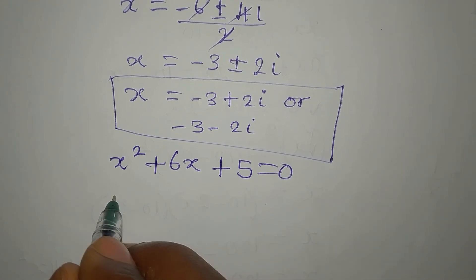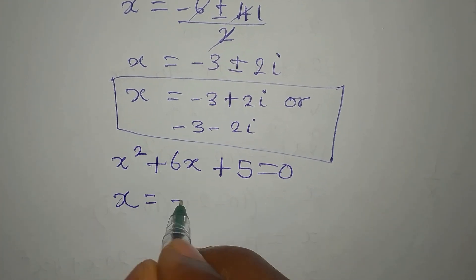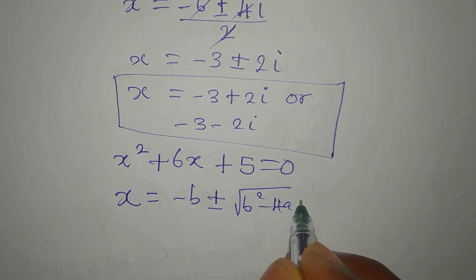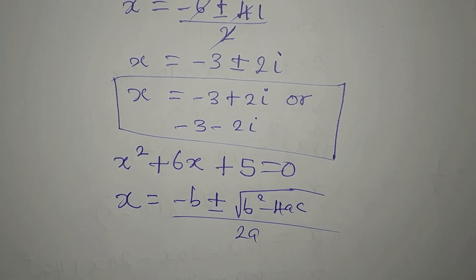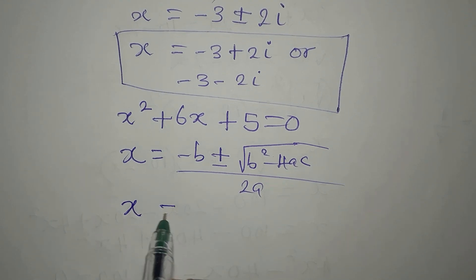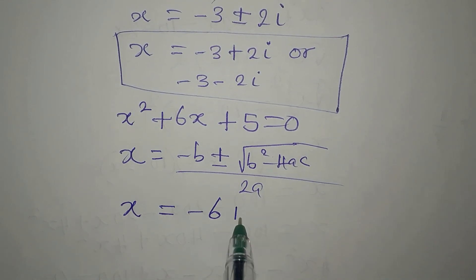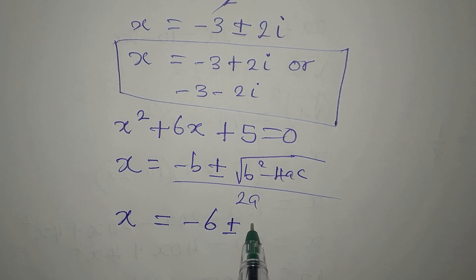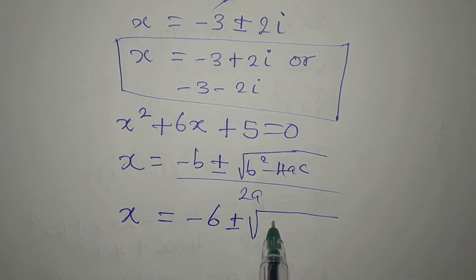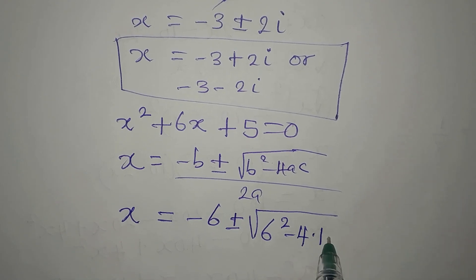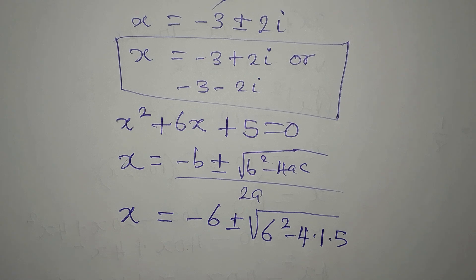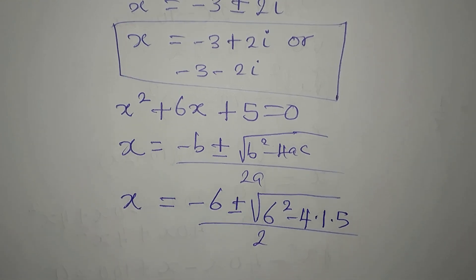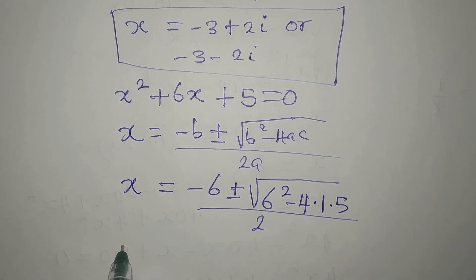Using the quadratic formula again: x equals negative b plus or minus the square root of b squared minus 4ac, all over 2a. For x² + 6x + 5 = 0, our x will be minus 6 plus or minus the square root of 6 squared minus 4 times 1 times 5, since a is 1 and c is 5, all divided by 2 times 1, which gives 2.